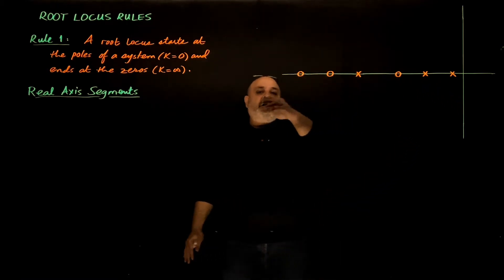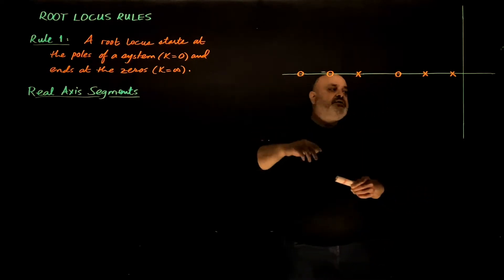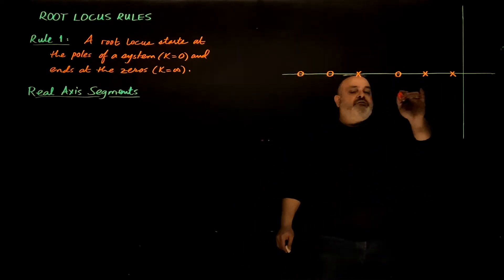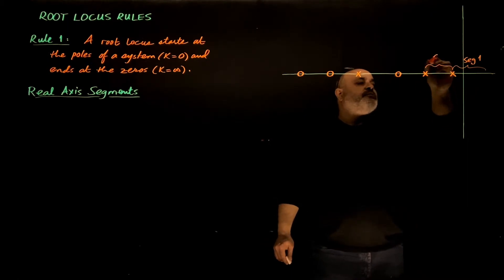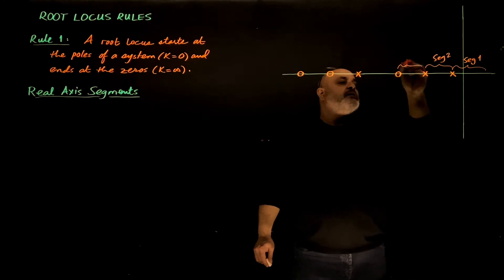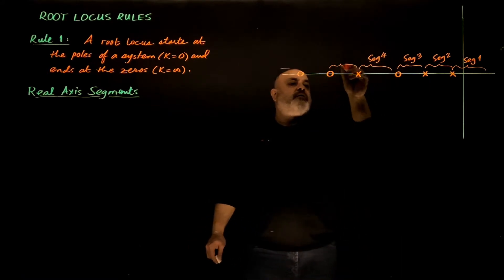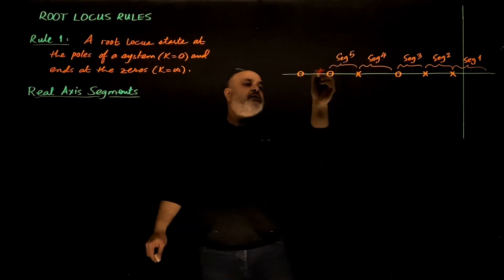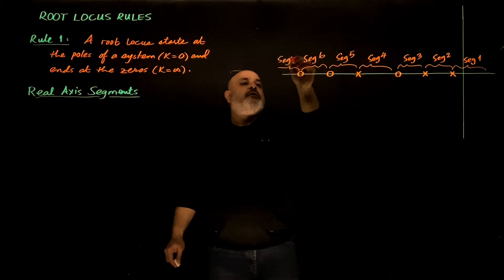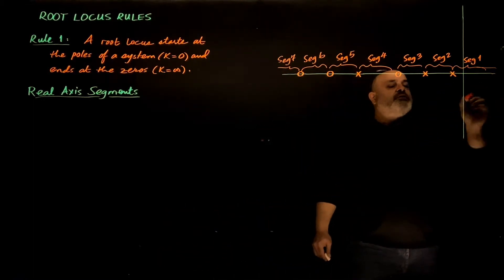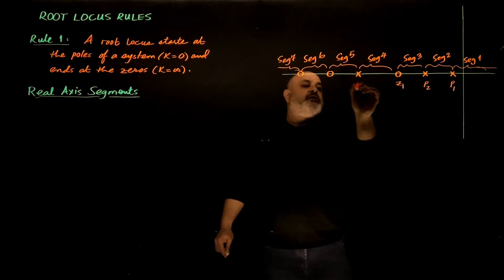Let's see where on the real axis we will have roots and where we will not. Let me divide the real axis into several segments: segment one, two, three, four, five, six, and segment seven to infinity. Segment one actually goes to infinity in the other direction. Let's call the poles and zeros: p1, p2, z1, p3, z2, z3.